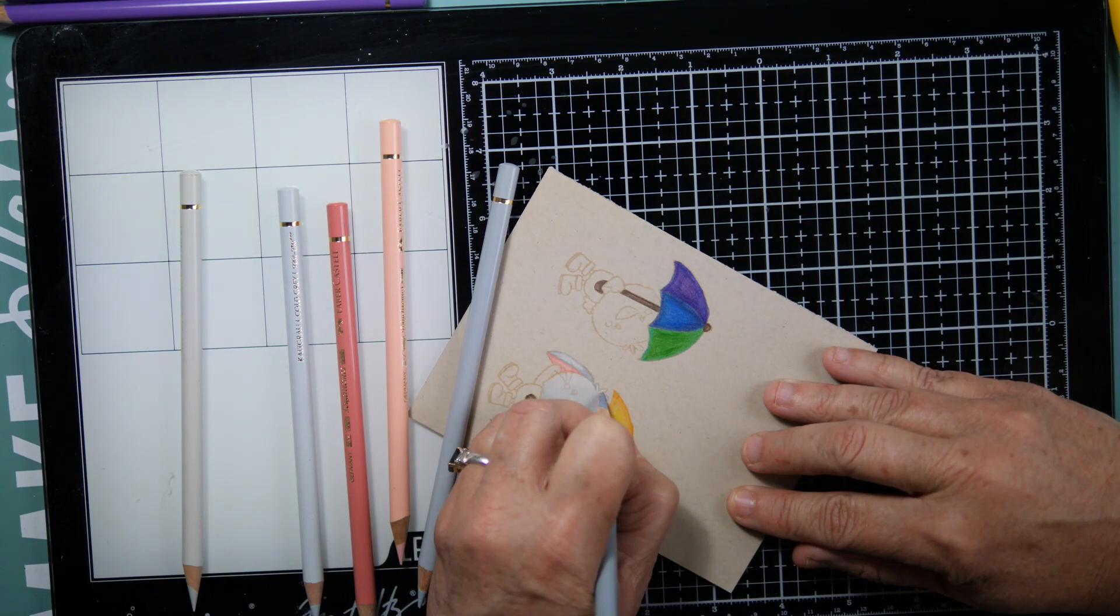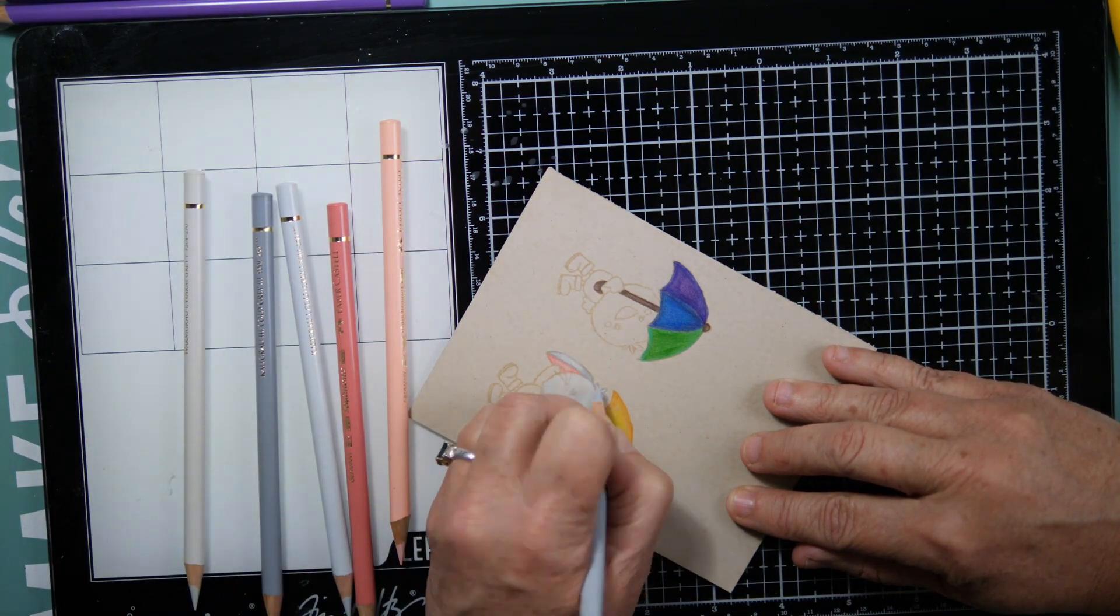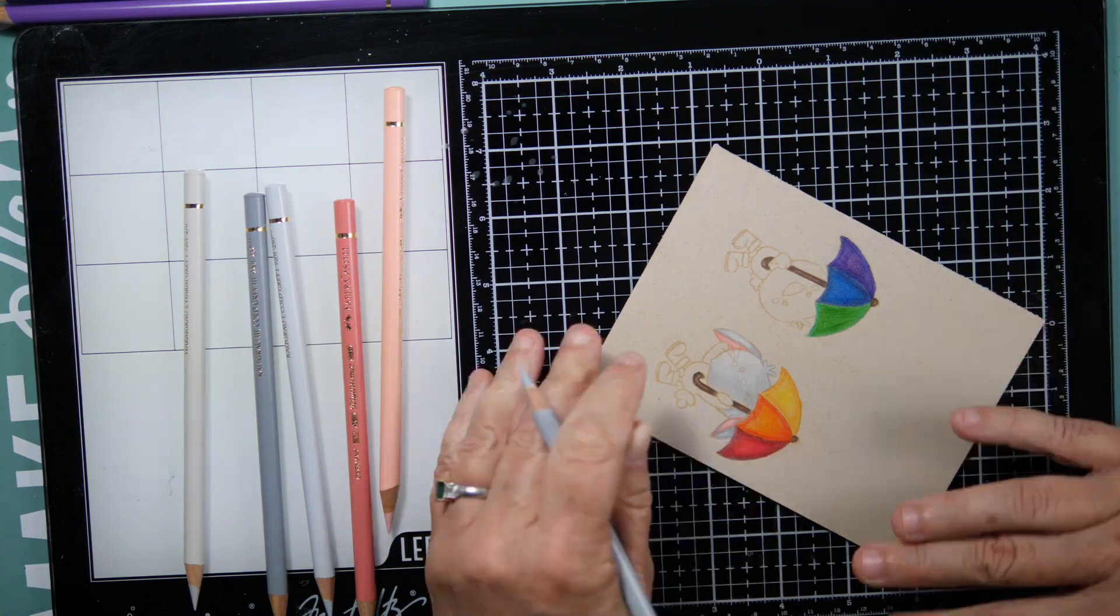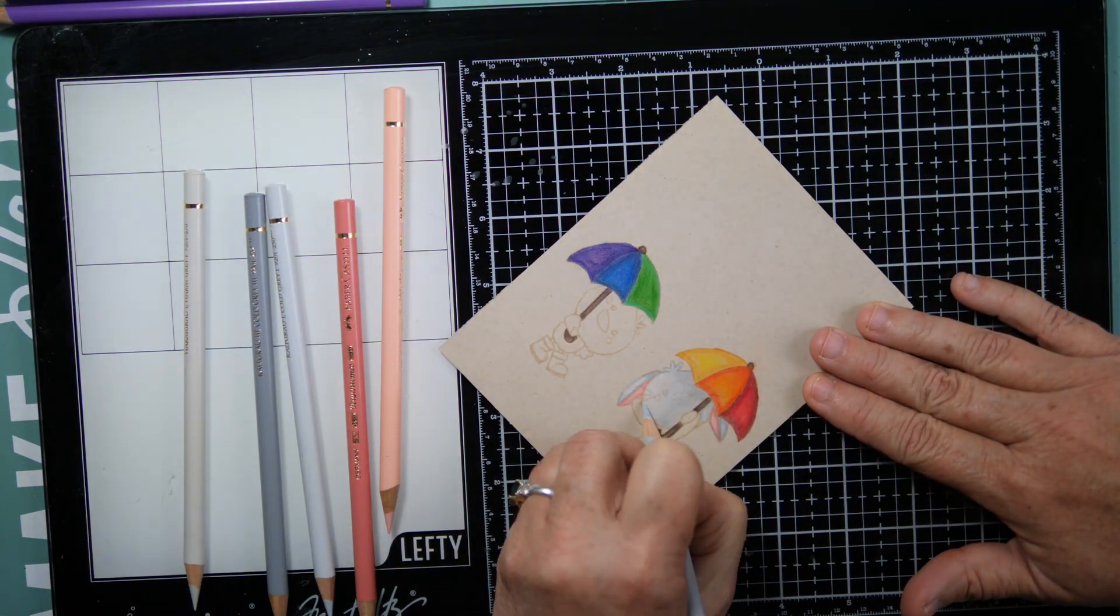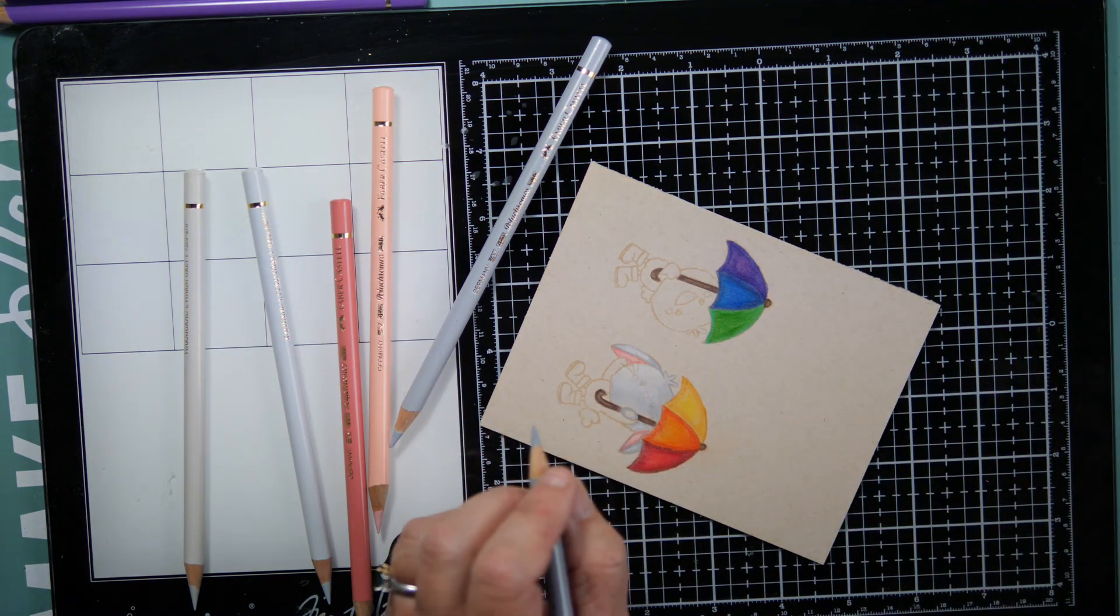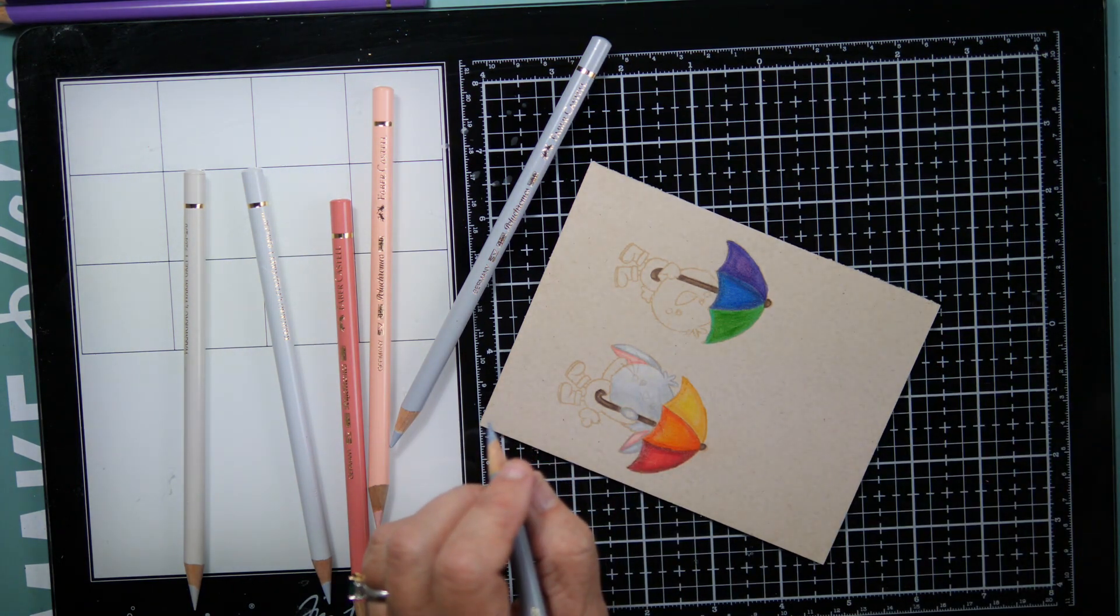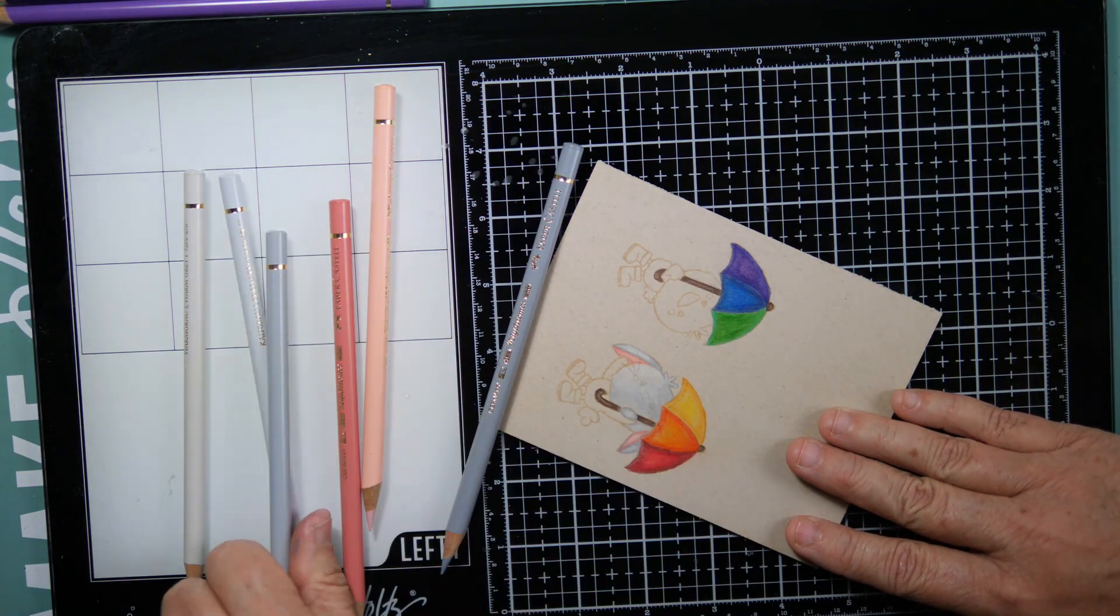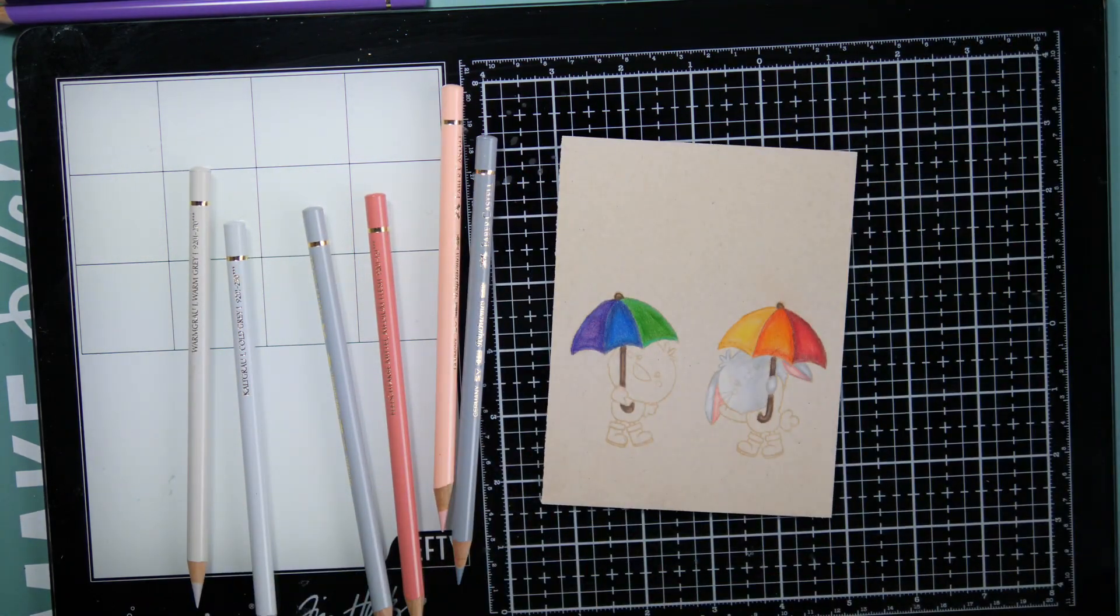You can see on this bunny right here I'm using cool grays. For the cool grays, I am doing a lot of shading where the bunny's head is under the umbrella because that's where the shadow would be cast.